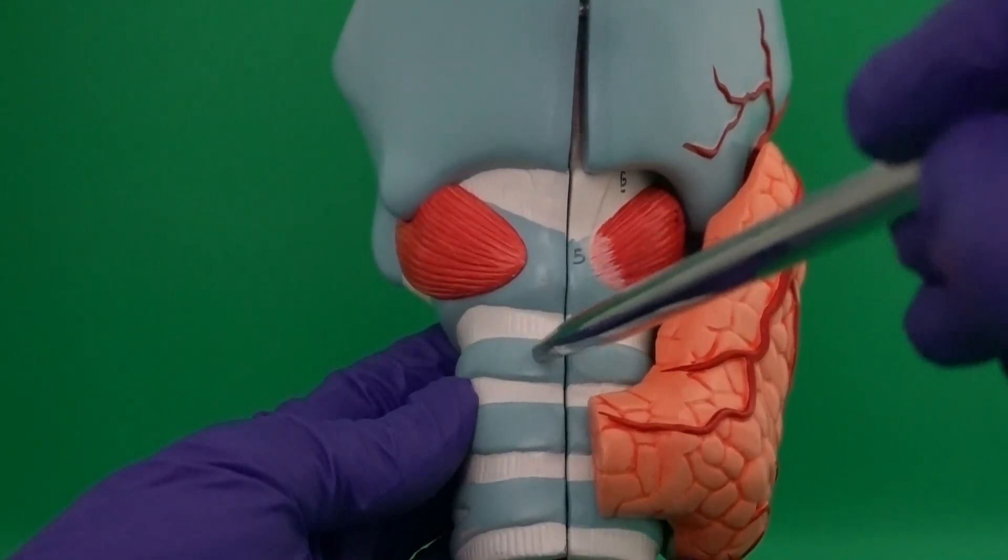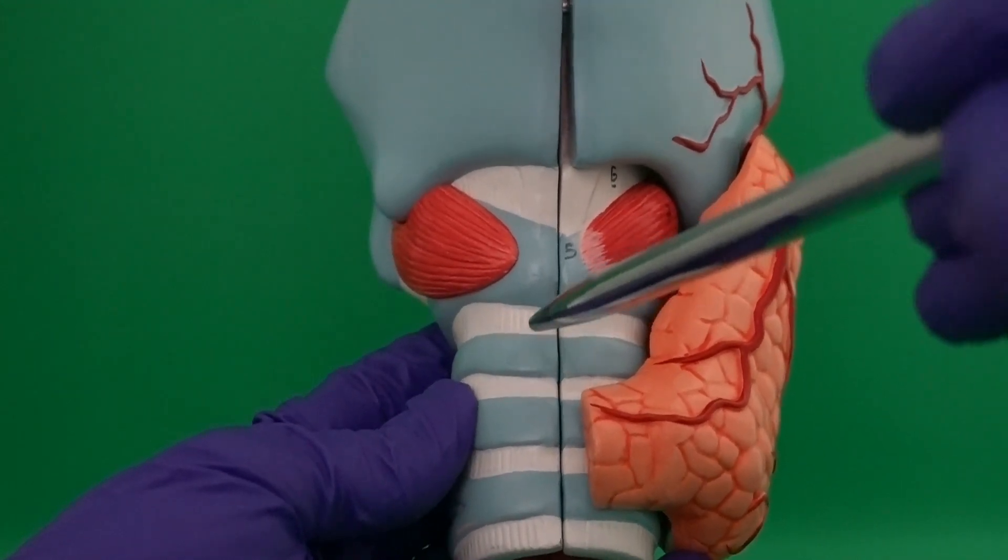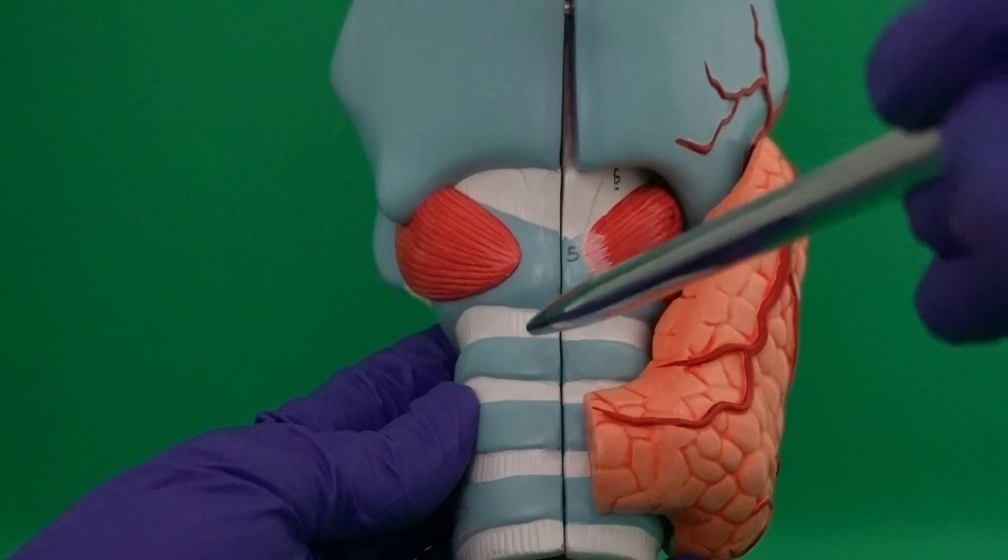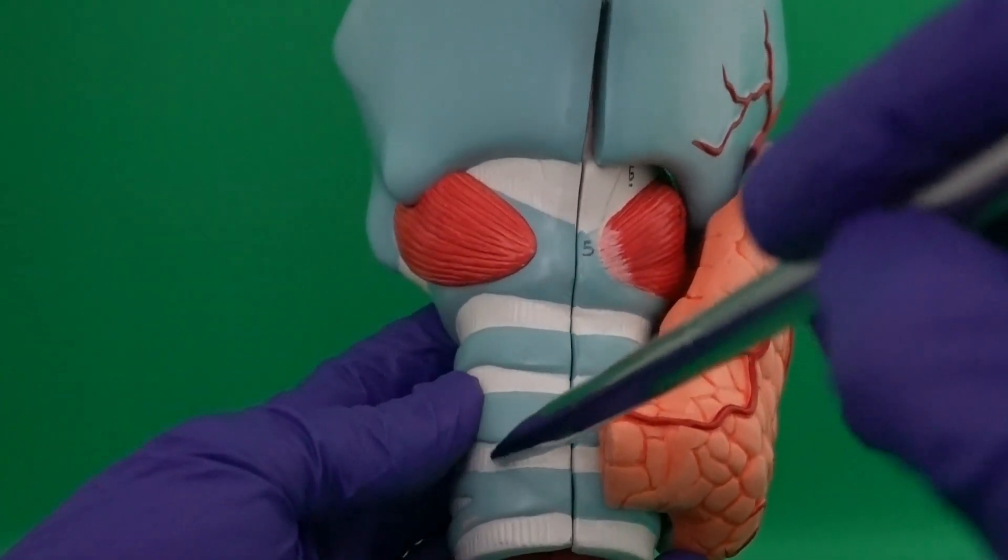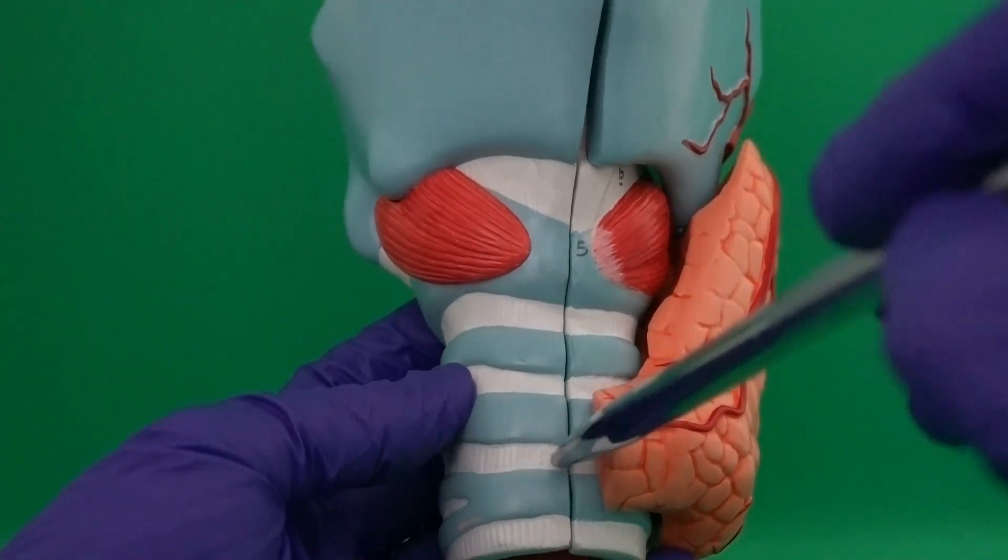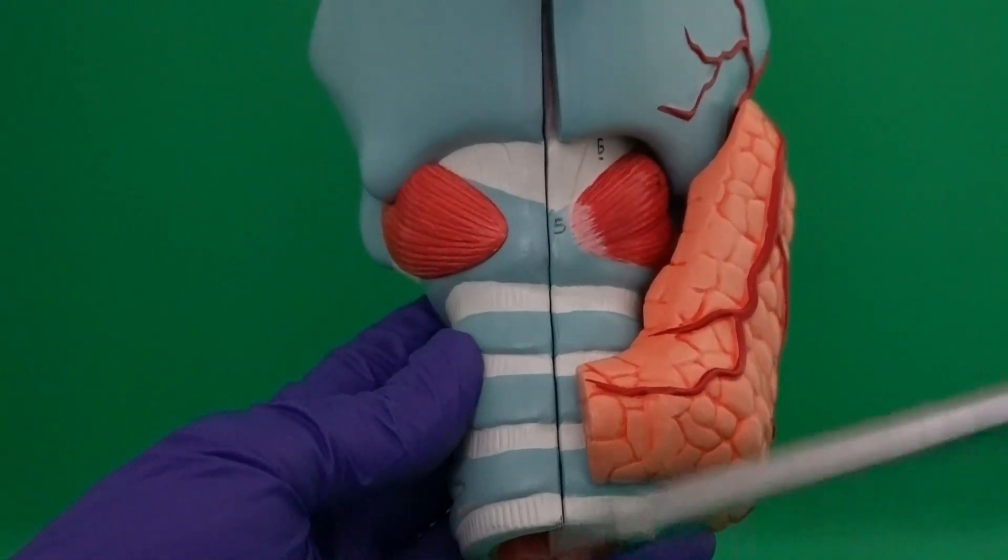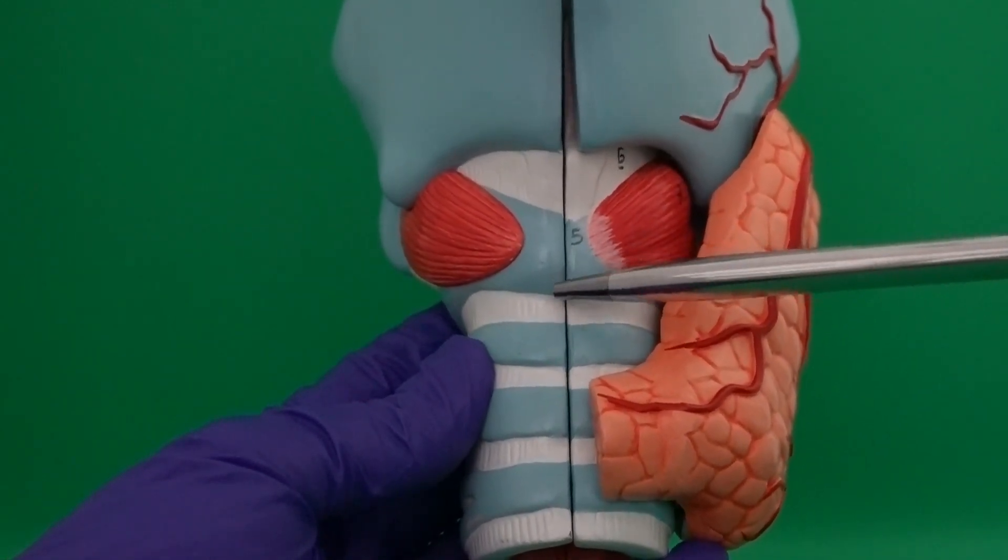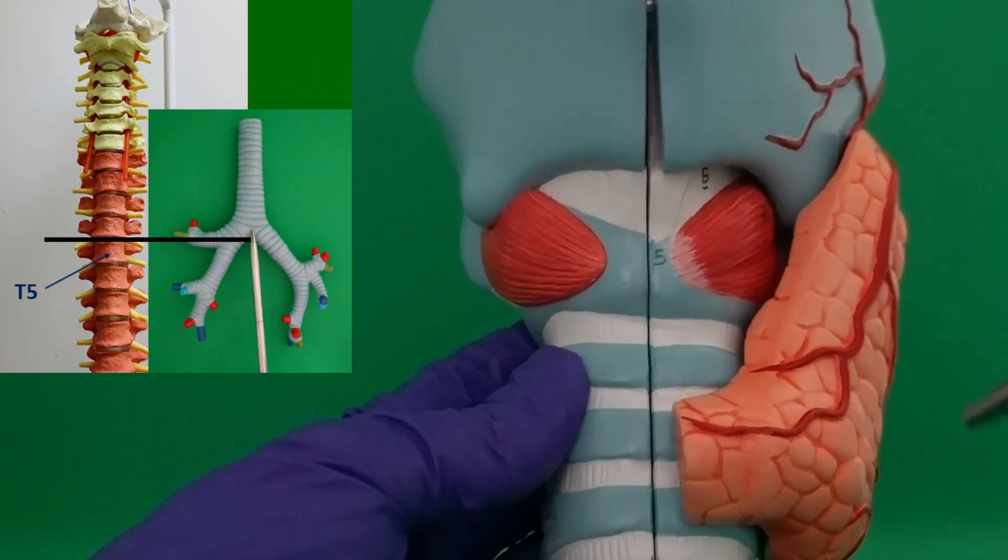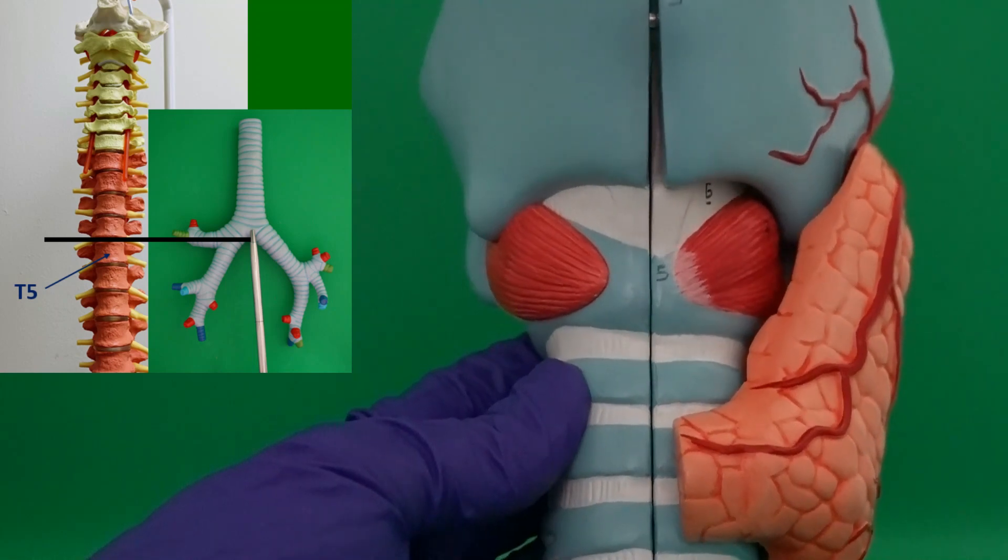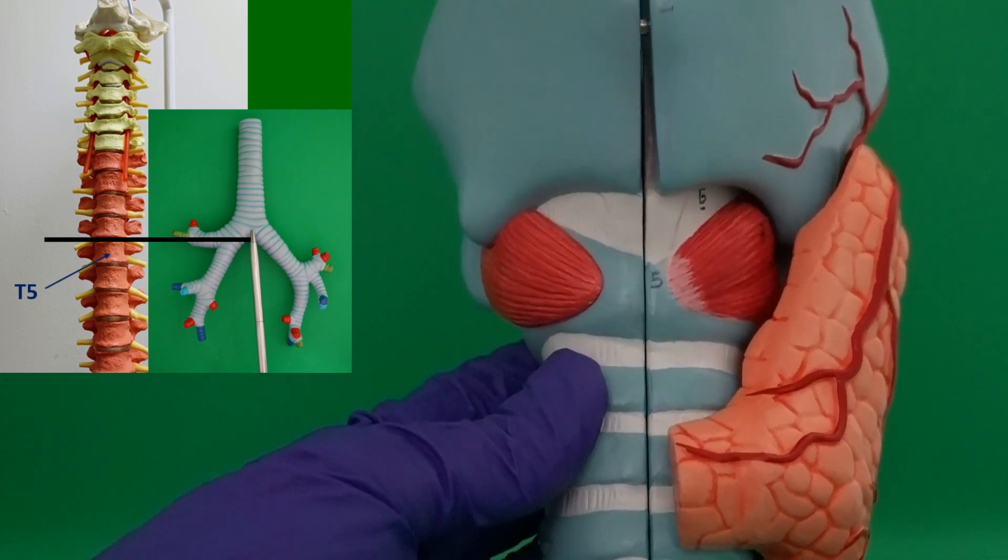When I count the number of hyaline cartilages that we have in trachea, we notice that we have 16 to 20 of these hyaline cartilages. These tracheal cartilages are connected to one another with dense membrane in between. When we follow trachea, we see that it starts below cricoid cartilage and ends at the superior border of thoracic vertebral bone number 5.